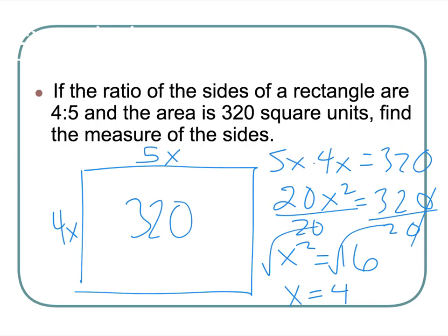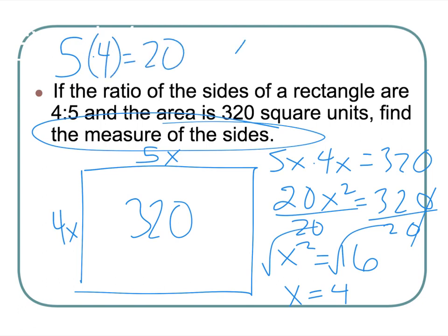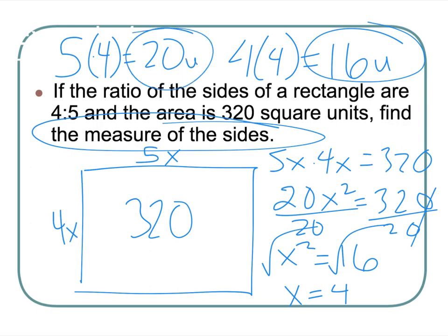don't forget to actually answer the question. Find the measure of the sides. 5 times 4 is 20. And 4 times 4 is 16. And that's apparently units. Cool. Those are my two side lengths. I love it. This guy is 16 and this one is 20. Woo!